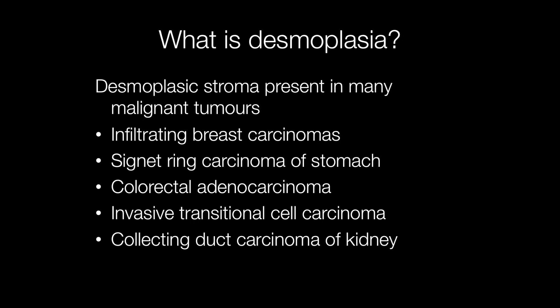Examples of tumours with desmoplastic stromas include infiltrating breast carcinomas, signet ring carcinoma of the stomach, colorectal carcinomas, invasive transitional cell carcinomas — for example of the bladder or renal pelvis — and a rare kidney tumour, collecting duct carcinoma, which has a characteristic desmoplastic stroma.